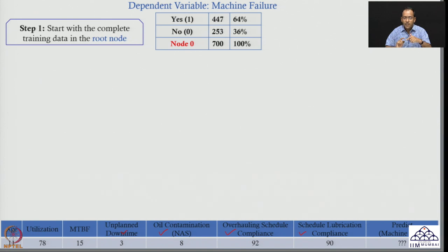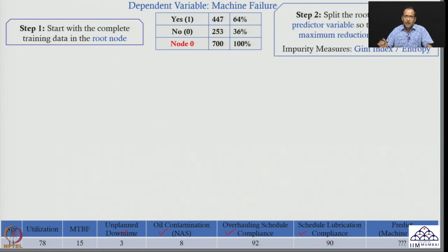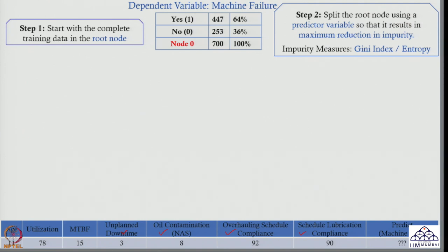Can I make a better prediction? For that, we will utilize parameters like age, utilization, MTBF value, and so on. We need to split the root node in such a way that impurity is reduced to the maximum. There are impurity measures like Gini index and entropy — we will talk about these indices in a later slide. The idea is to find how to split this node into two parts so that overall impurity is reduced to the maximum.